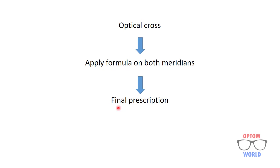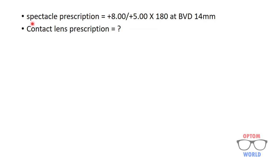Let's do it with an example. Suppose we have a spectacle prescription of plus 8 sphere with plus 5 cylinder at axis 180, at a back vertex distance of 14 millimeters. What will be the contact lens prescription for this case? Let's calculate it.